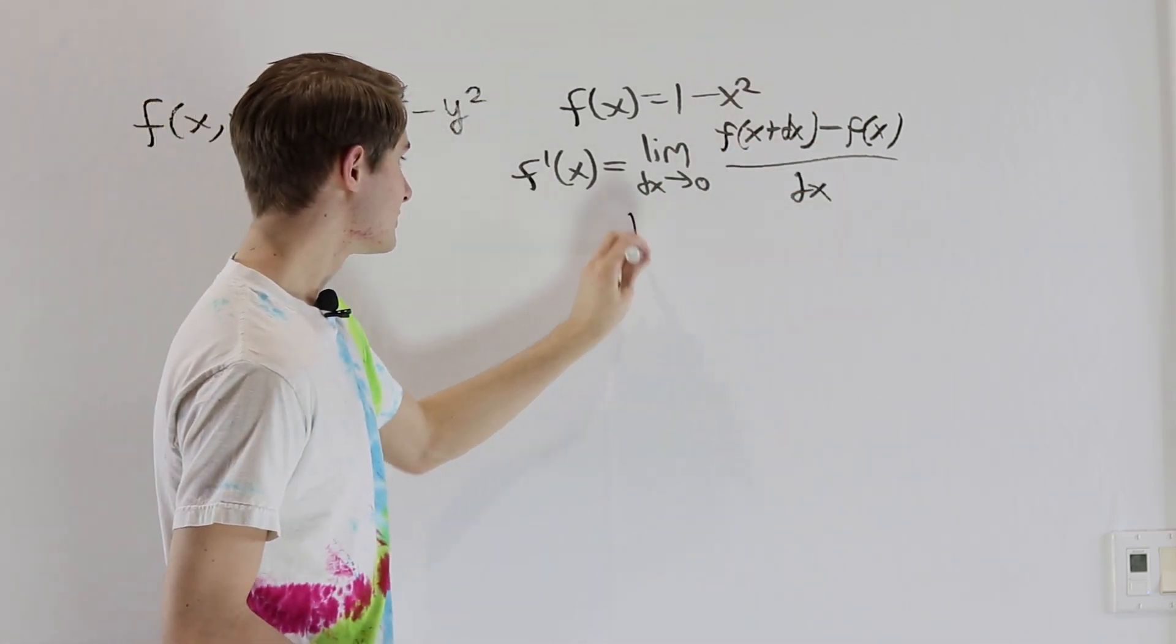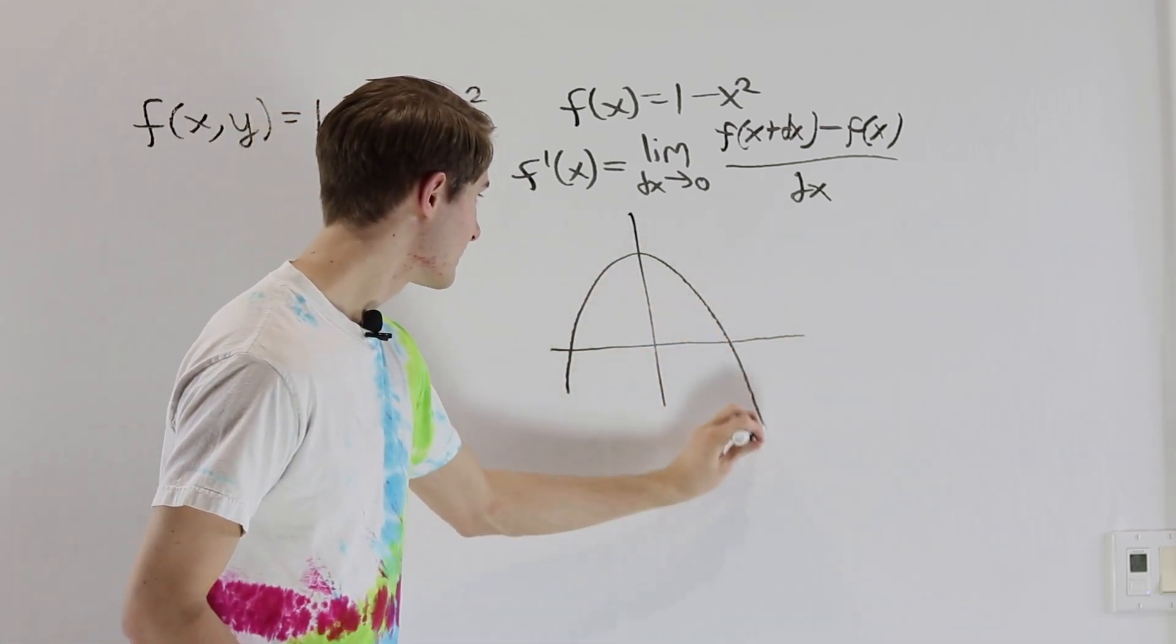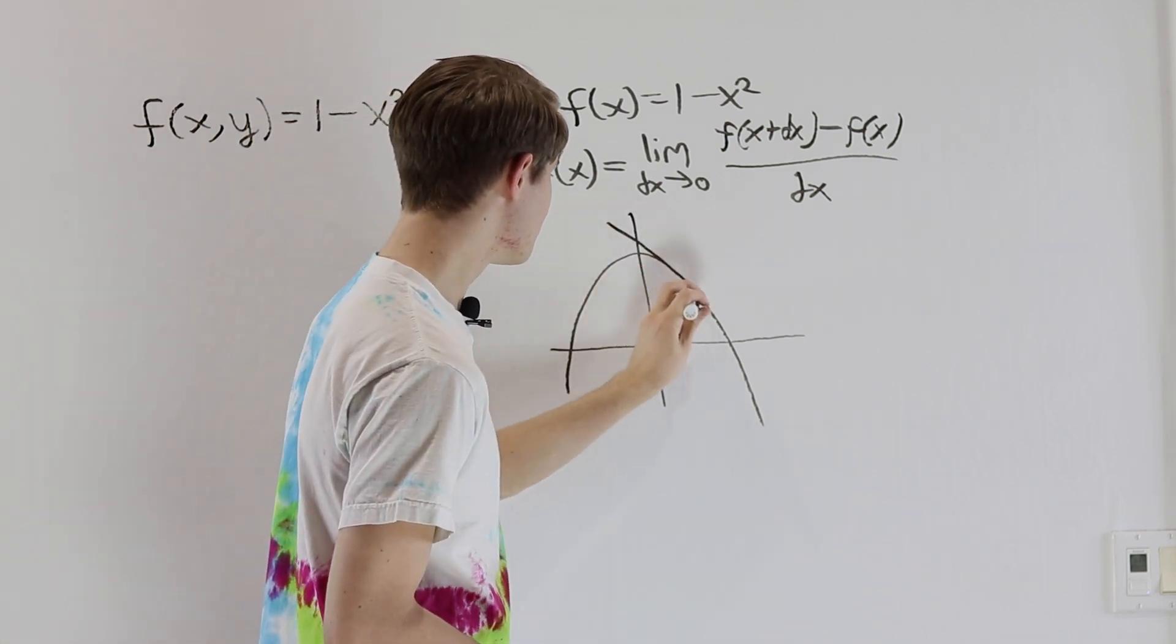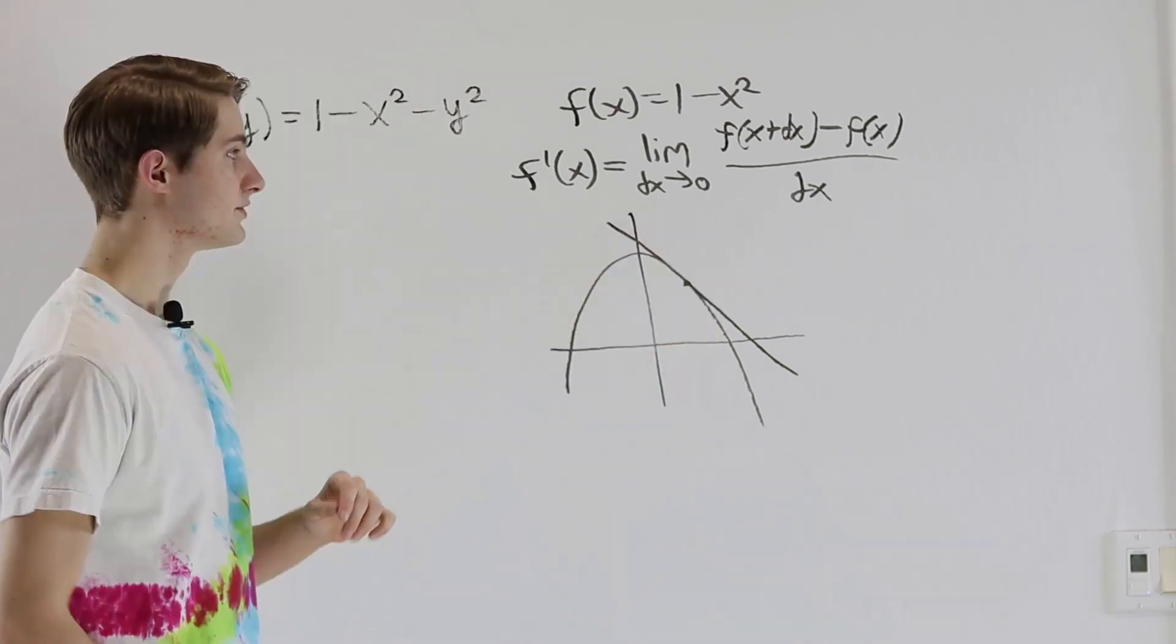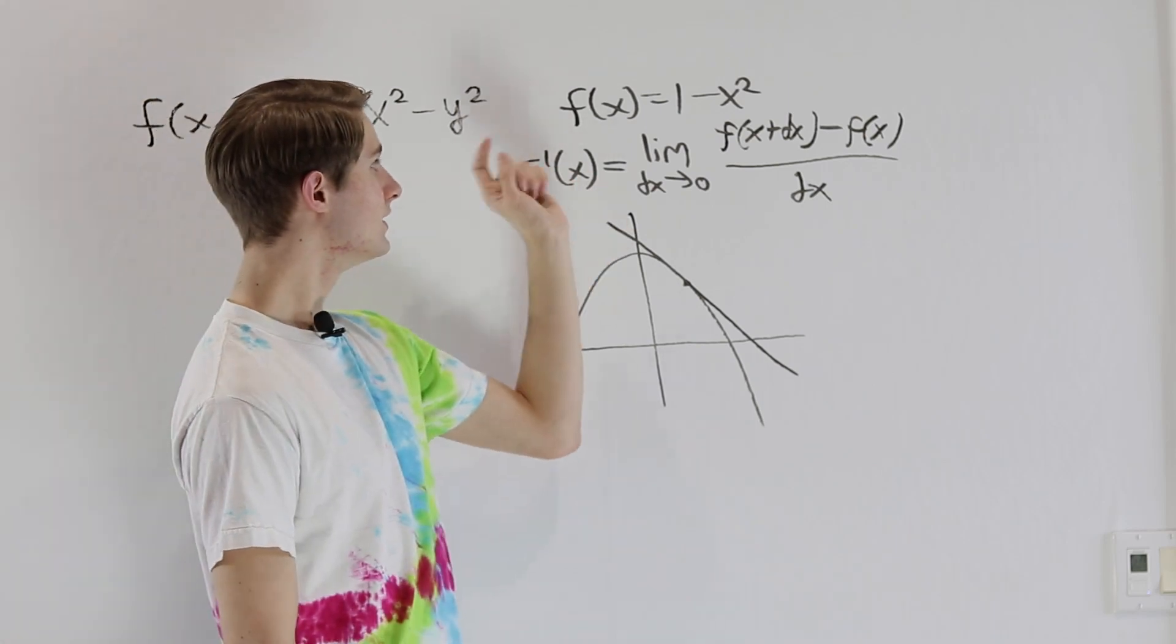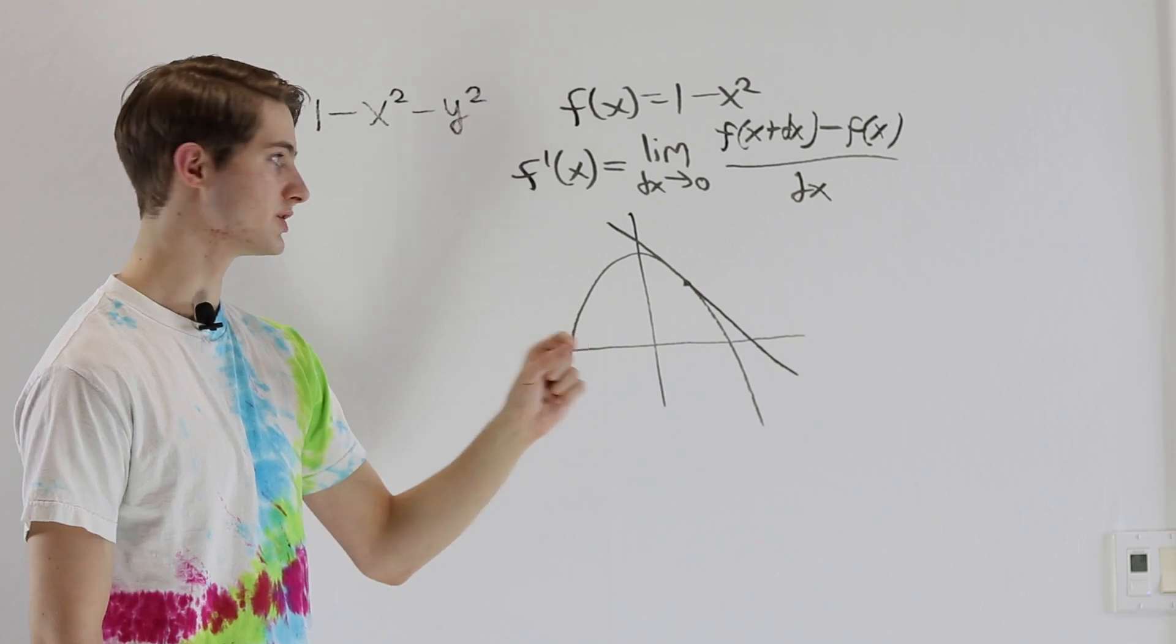So graphically what this looks like is when we take a look at the function 1 minus x squared like this, the derivative at a particular point is going to be the slope of the tangent line that passes through the point. So the way that we take derivatives of single variable functions is we look at what happens if we take very small changes in an input to the function.